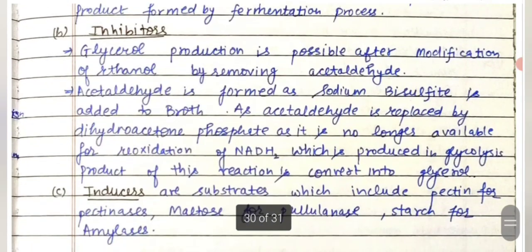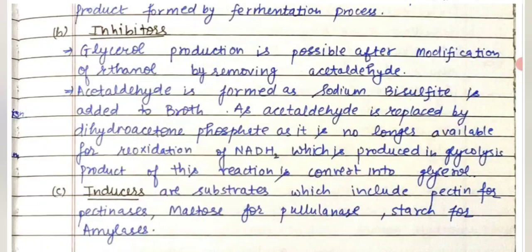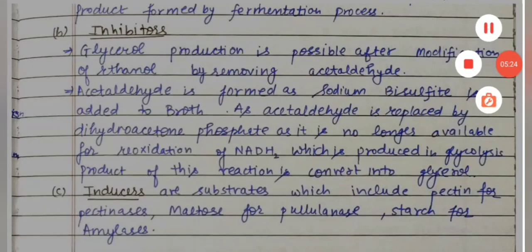Then inhibitors. Glycerol production is possible after modification of ethanol by removing acetaldehyde. Acetaldehyde is formed when sodium bisulfite is added to the broth. As acetaldehyde is replaced by dihydroxyacetone phosphate, it is no longer available for the reoxidation of NADH2 produced in glycolysis, and the product of this reaction is converted into glycerol.